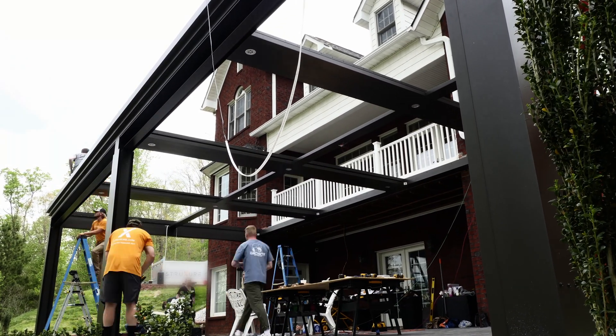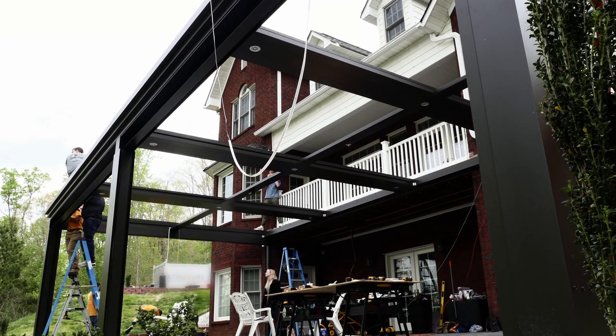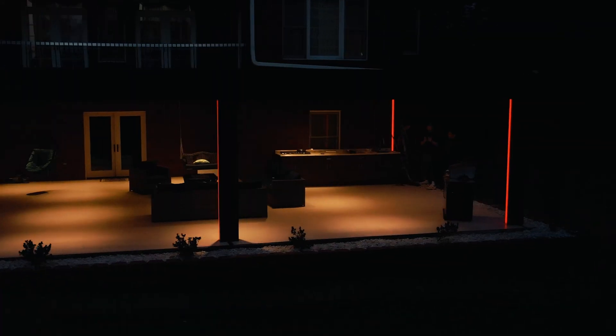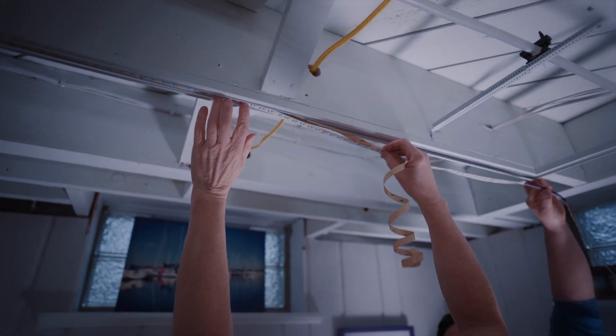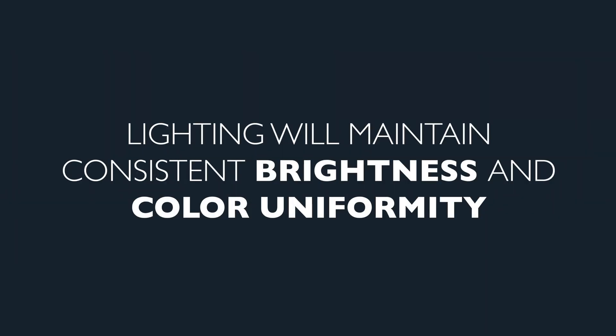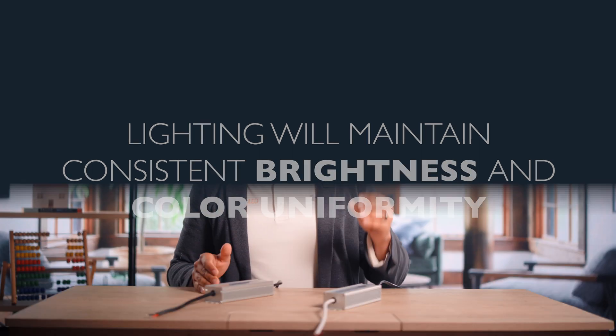Moving on to 24VDC, or 24V direct current. This popular voltage option is widely used in commercial and residential applications. With this slightly higher voltage, 24VDC allows for longer runs of LED lighting fixtures without experiencing significant voltage drop. This means that your lighting fixtures will maintain consistent brightness and color uniformity, even for larger installations, resulting in stunning and professional lighting effects.